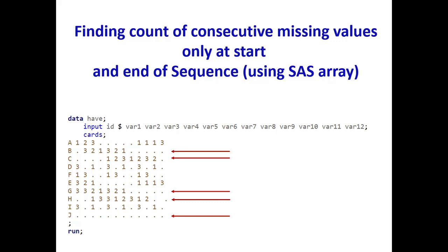Hello everyone, welcome to my channel. If you have not already subscribed, please do subscribe. Today's topic is finding the count of consecutive missing values only at the start and at the end of a sequence.